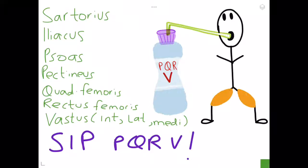The Psoas muscle is supplied by the lumbar plexus and the rest of the muscles in the anterior thigh are supplied by the femoral nerve. So that's it, that's the mnemonic: S-I-P-P-Q-R-V. Inshallah I hope this helps, please like and subscribe, and thank you for watching.